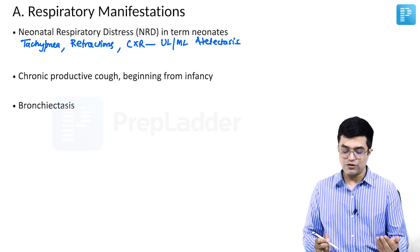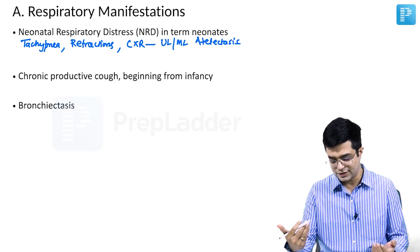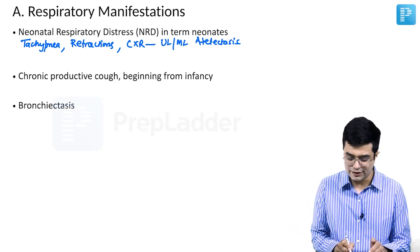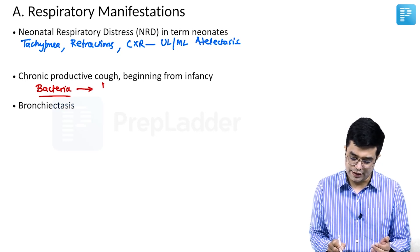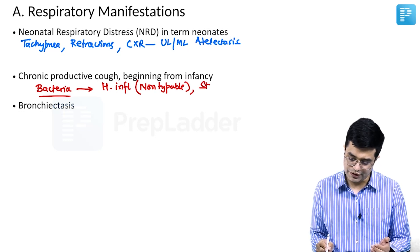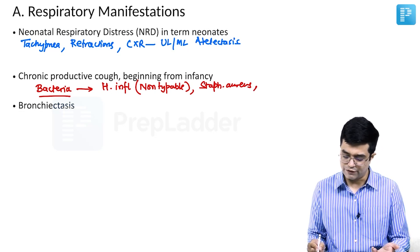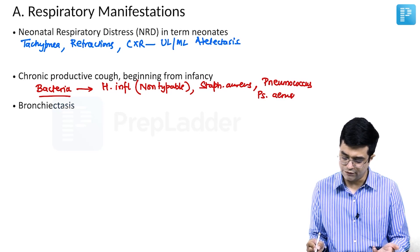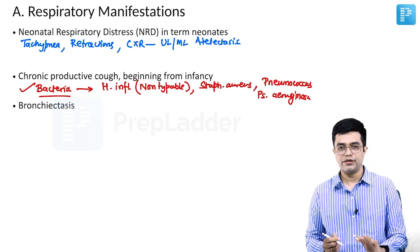Bronchiectasis can develop due to recurrent bacterial and viral infections. This chronic cycle of infection eventually causes damage and dilatation of the bronchus. The common bacteria responsible for exacerbations include Haemophilus influenzae — particularly the non-typable forms — Staph aureus, which is a common reason for colonization and exacerbation, Streptococcus pneumoniae, and Pseudomonas aeruginosa. These are the four top pathogens found in Kartagener syndrome airway secretions and bronchoalveolar lavage.